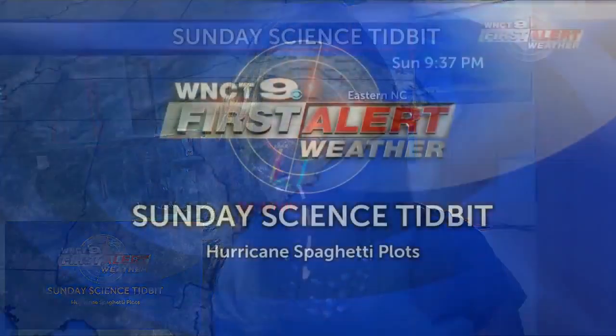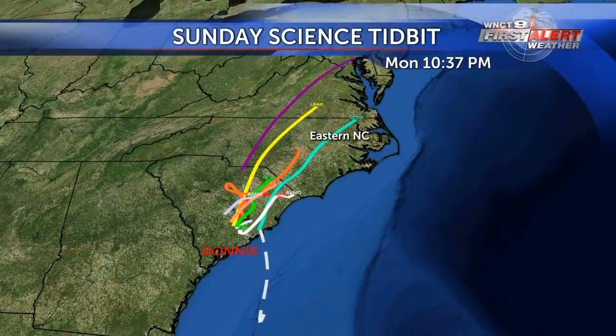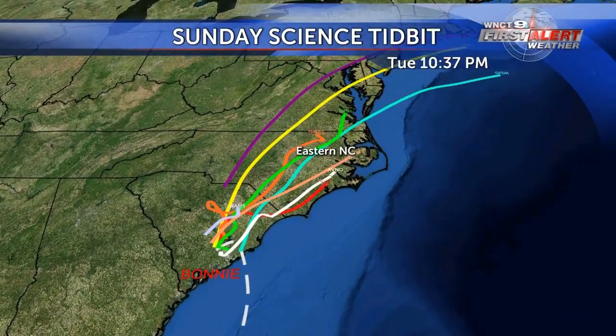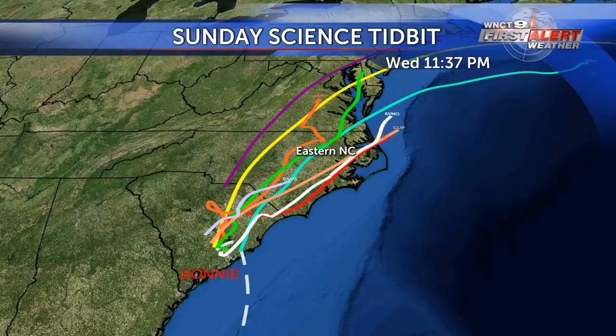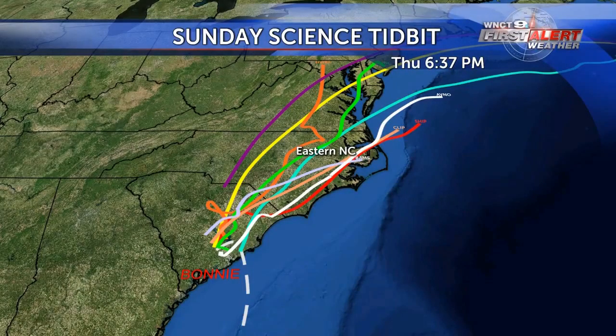Hi, meteorologist Candace Folling here. Time for your Sunday Science Tidbit and this week we're going to be talking about hurricane spaghetti plots. Hurricane spaghetti plots help us visualize where a storm may go on future bases, using different model members that range in structure and complexity.